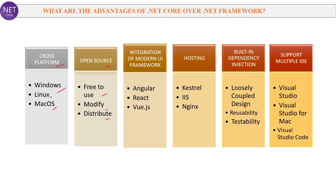Third advantage is .NET Core is easy to integrate with modern UI frameworks like Angular, React and Vue.js. .NET Framework can also be integrated with these UI frameworks but comparatively it is easier with .NET Core. Next advantage is hosting — it can be hosted on multiple servers like Kestrel, IIS and Nginx. .NET Core has built-in dependency injection which enables loosely coupled design. And .NET Core supports multiple IDEs like Visual Studio, Visual Studio for Mac and Visual Studio Code, whereas .NET Framework supports only Visual Studio.